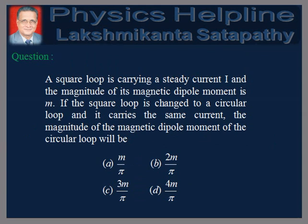A square loop is carrying a steady current I and the magnitude of its magnetic dipole moment is M. If the square loop is changed to a circular loop and it carries the same current, the magnitude of the magnetic dipole moment of the circular loop will be: M by Pi, 2M by Pi, 3M by Pi, or 4M by Pi.